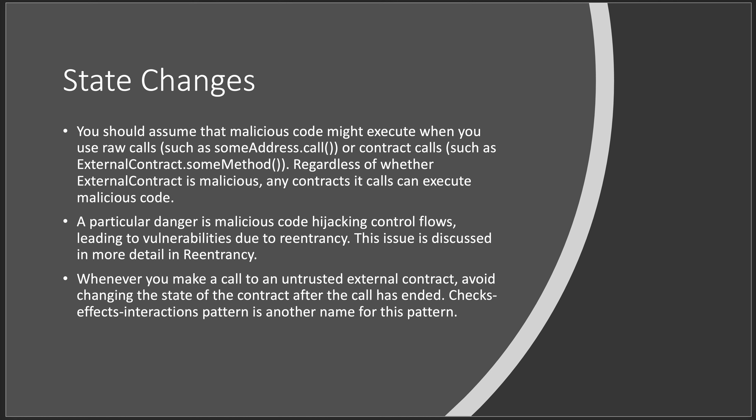On state changes: you should assume that malicious code might execute when you use a raw call, such as some `address.call`, contract calls, or something else as an external contract in a method. Regardless of whether the external contract is malicious — you don't know — it may be that perfect attack surface that lets someone into your contract. Any contract that calls can execute malicious code. You may call another contract, that contract may call another contract — you may go layers deep.